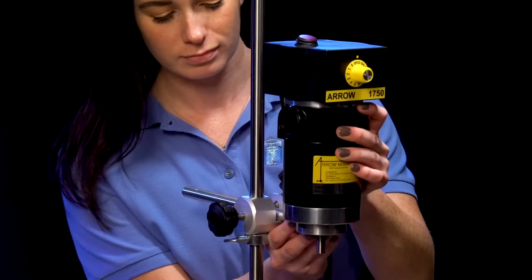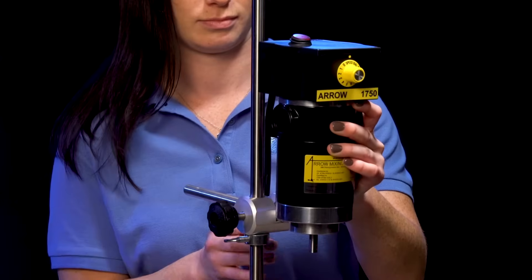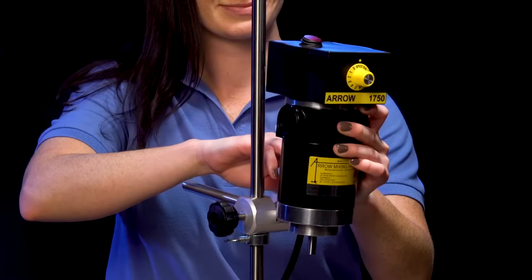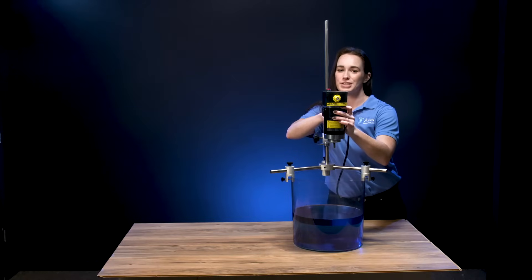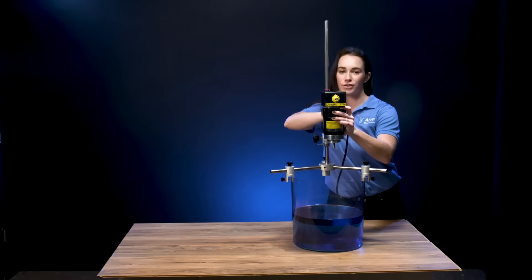Now, secure your Arrow mixer to the stand by sliding the stirrer's bracket shaft onto the U-channel of the clamp. Fasten the knob to secure the mixer at the desired angle and location.